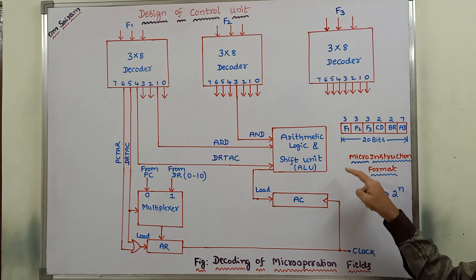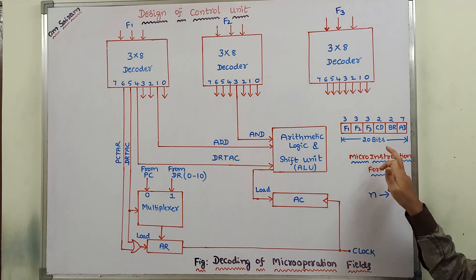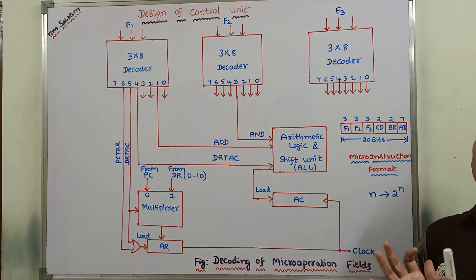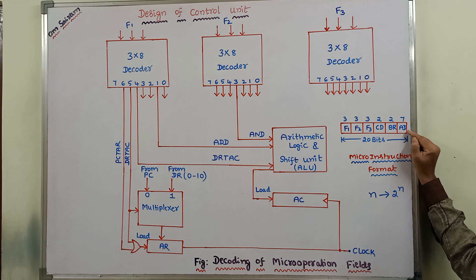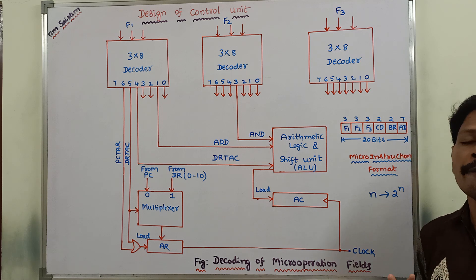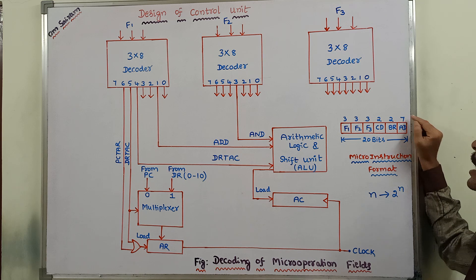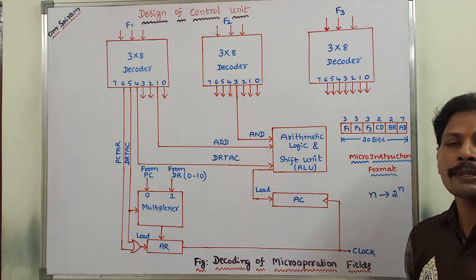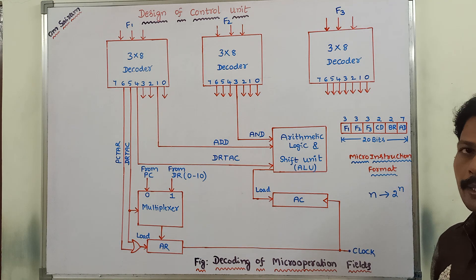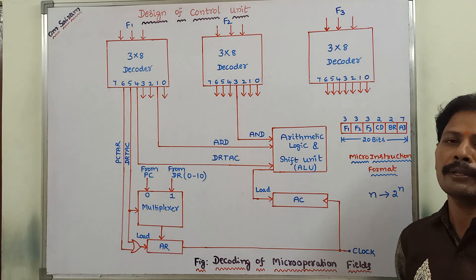This microinstruction format consists of 20 bits. These 20 bits are divided into four fields. The first field is called the AD field — AD field stands for address field. It consists of 7 bits. The AD field contains the addresses of the microinstructions, and sometimes it may also contain a branch address.